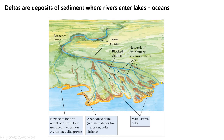Deltas are one of the few places on Earth that have what are called distributary channels. Distributary means that instead of river channels coming together, they actually split and bifurcate as they approach the delta. So a main channel splits into three separate channels which wind around as they make their way to the ocean.